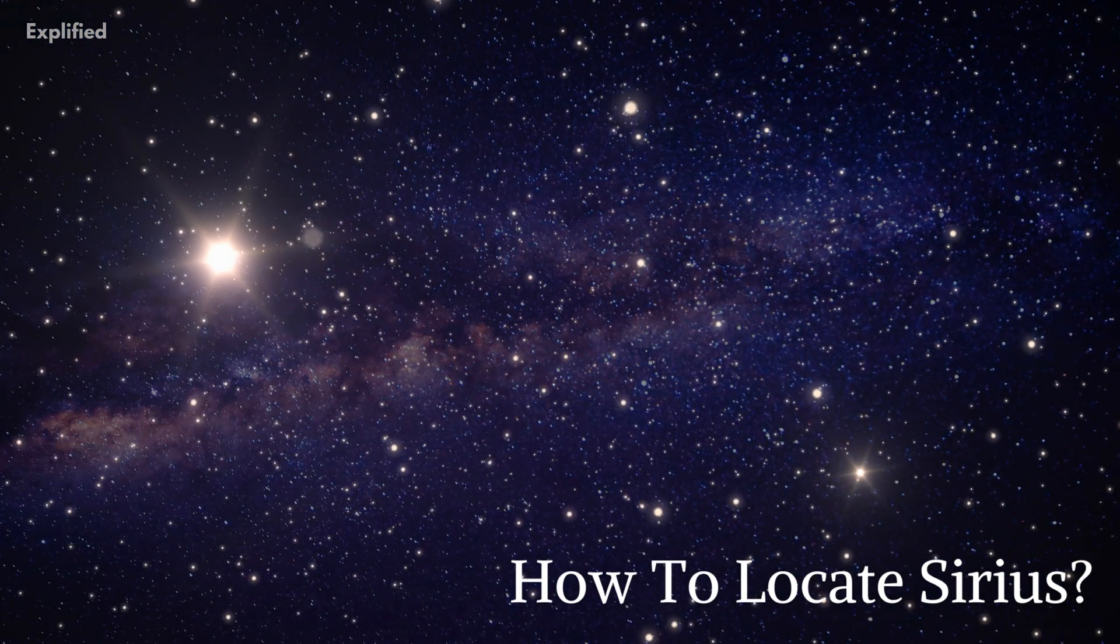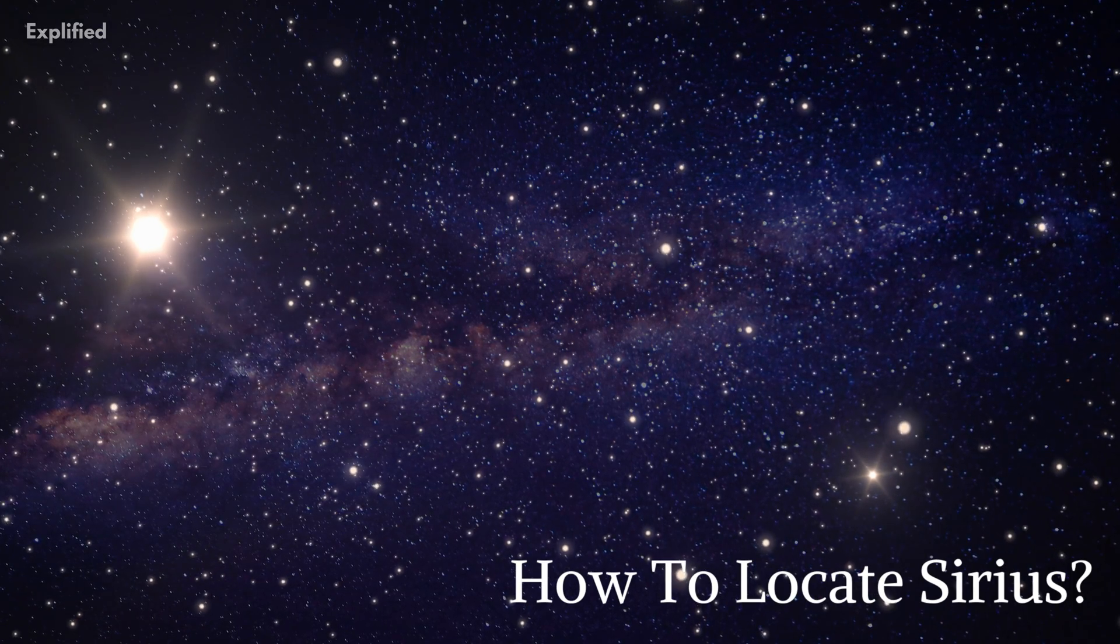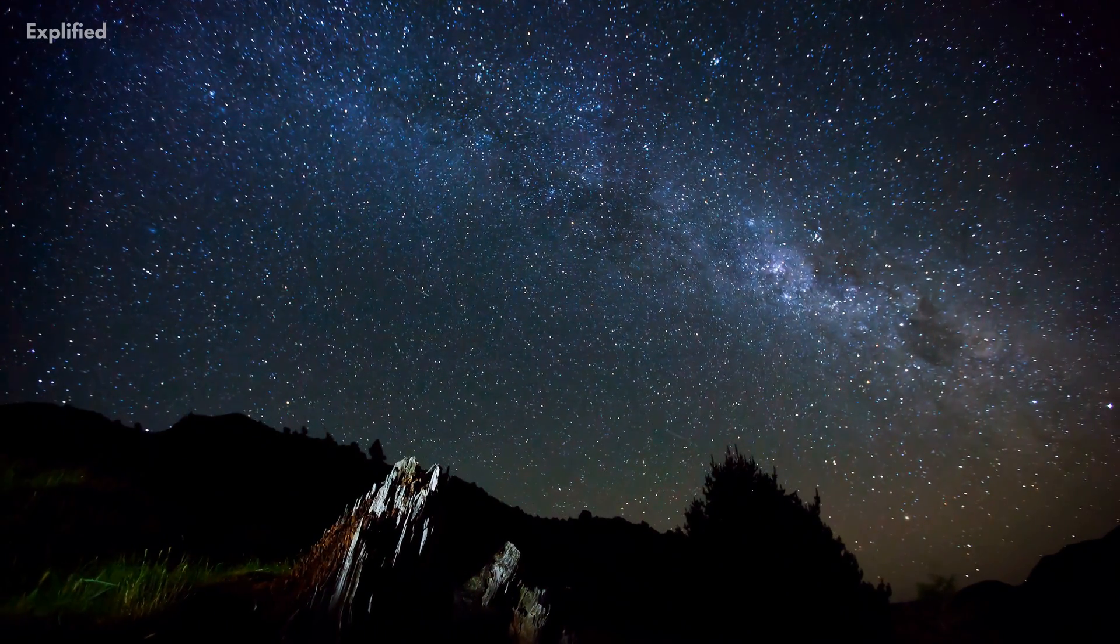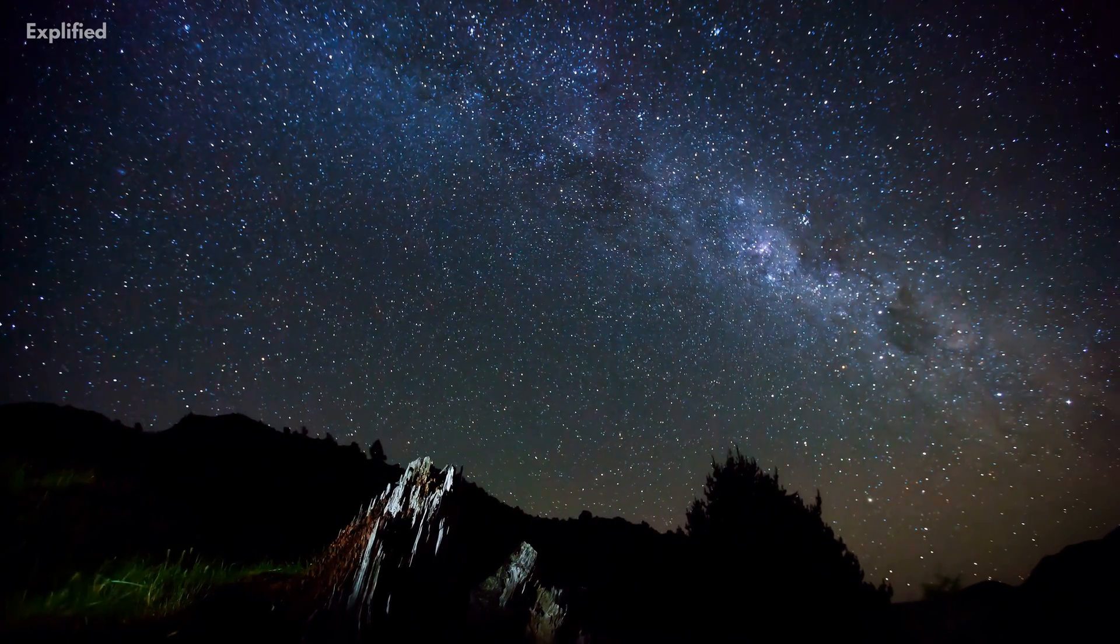How to locate Sirius? Sirius sets in the southwest, rises in the southeast, and arcs across the southern sky, as seen from mid-northern latitudes, including most of the United States.